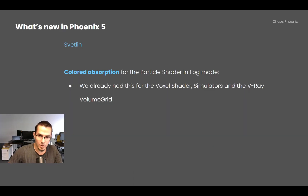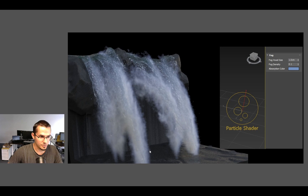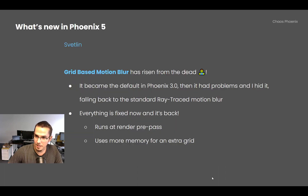Colored absorption was added to the particle shader in fog mode — we already had this for the voxel shader. It allows you to tint the color of, for example, mist particles rendered as fog, which makes the render more interesting.